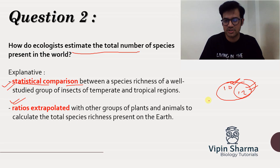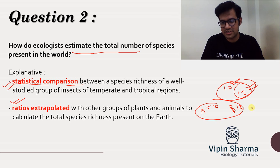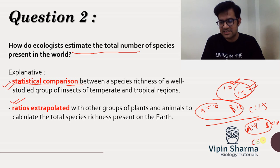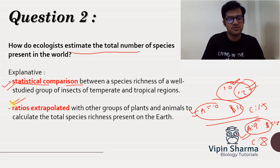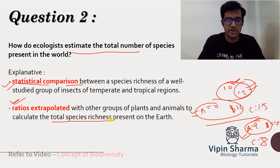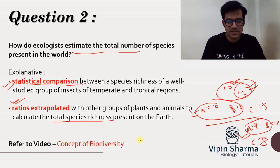The second method is getting the ratio. Species A is 10, species B is 12, species C is 15 in one area — there's a ratio existing between them, allowing you to estimate richness. In a different area, species A is 9, species B is 12, species C is only 8. The ratio between the two areas is different. By getting the ratios of different groups of plants and animals, ecologists can calculate the total species richness present on Earth.